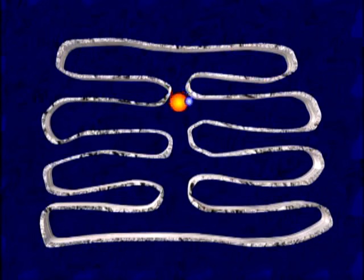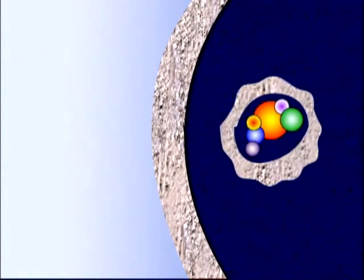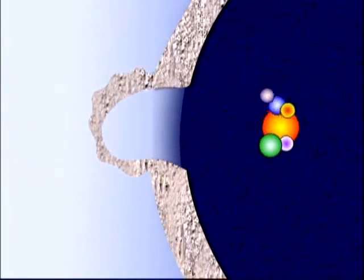The Golgi apparatus takes simple molecules, combines them into more complex molecules, then distributes them. These complex molecules are placed into vesicles, which transport their cargo from the Golgi apparatus to various locations, including the cell membrane, where the nutrients can be released from the cell. Vesicles are also found in the cytoplasm, where they transport substances from one place to another.